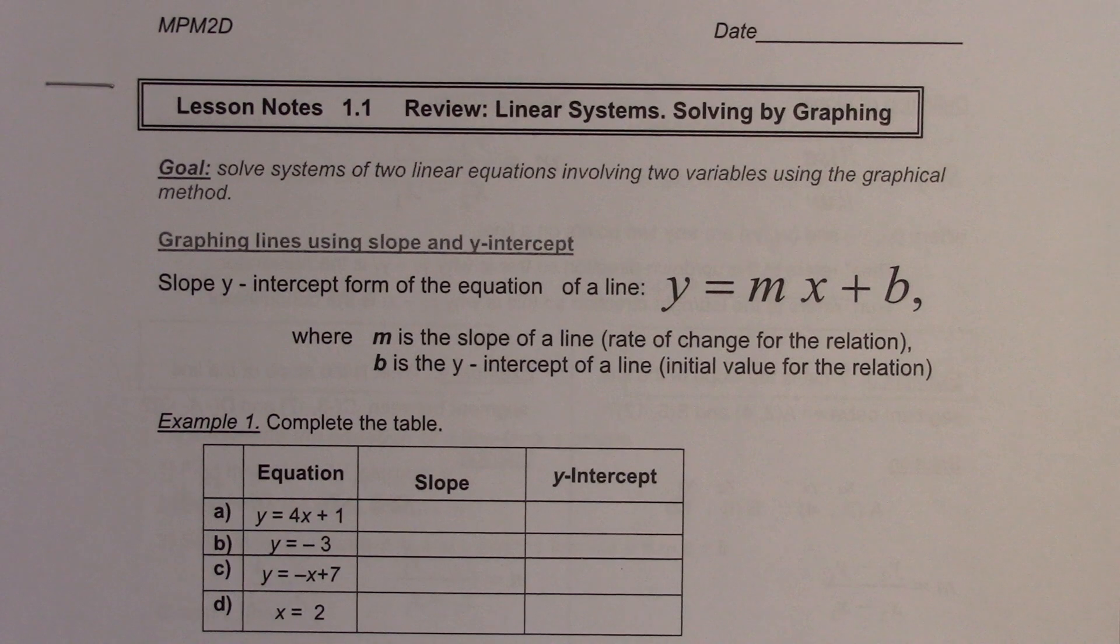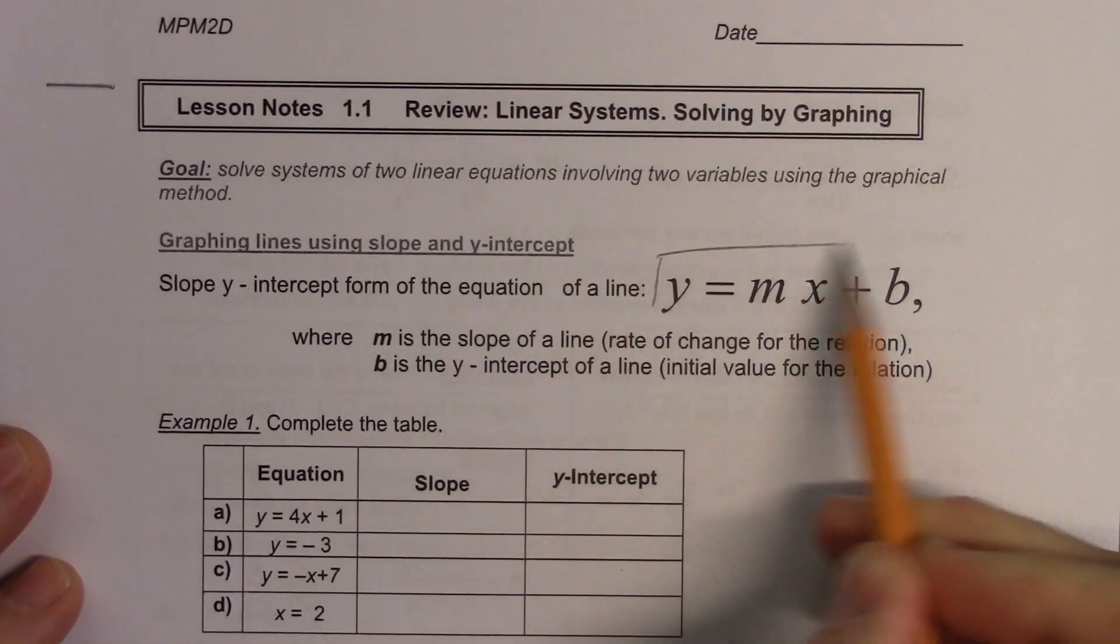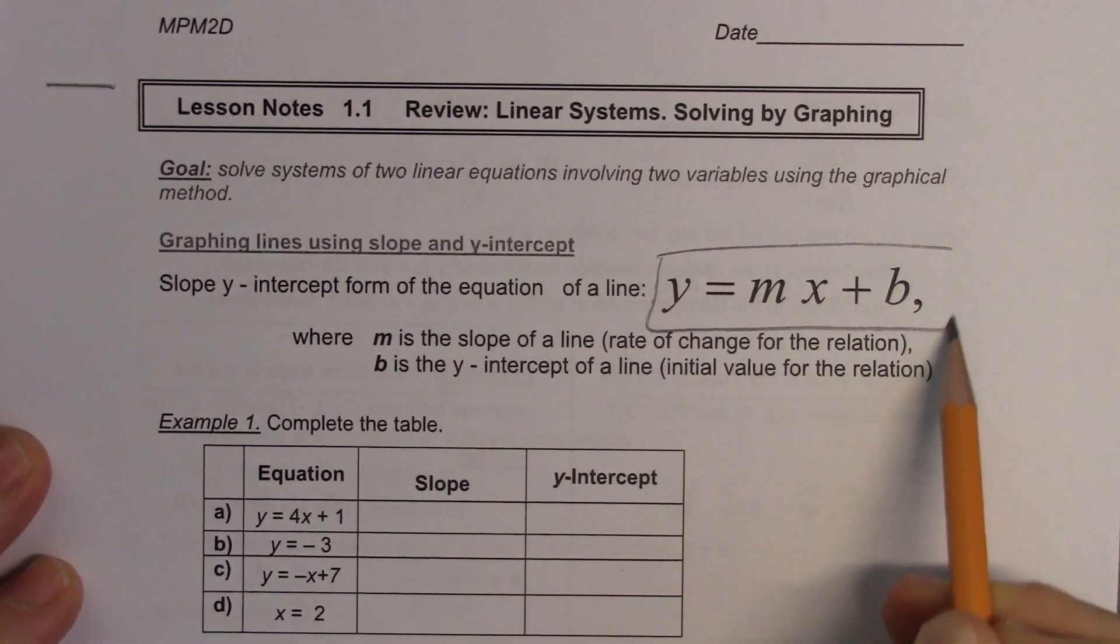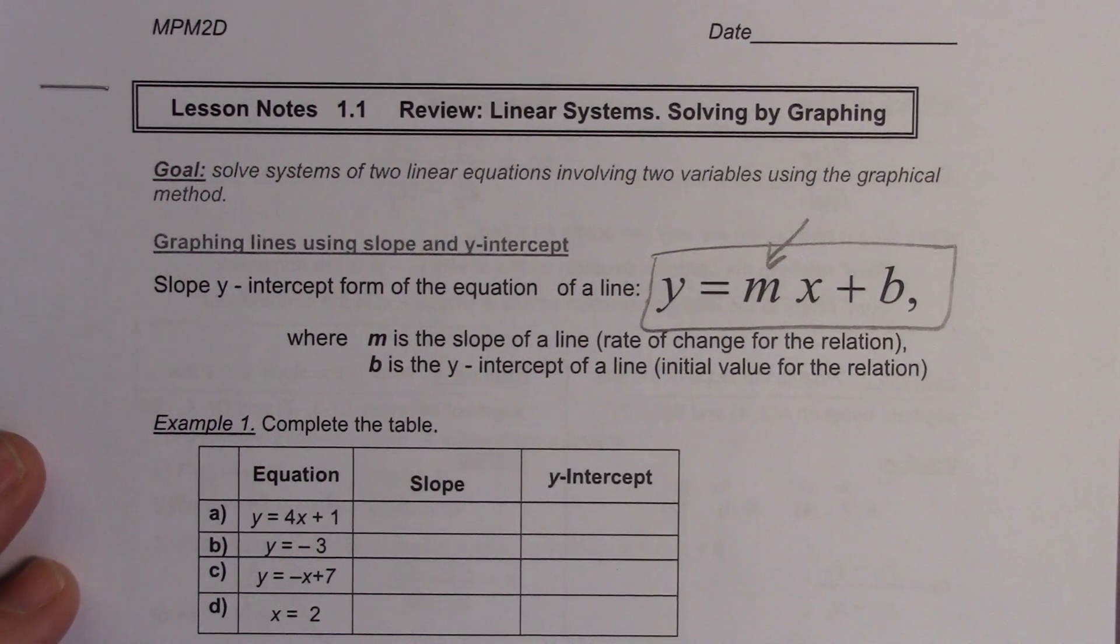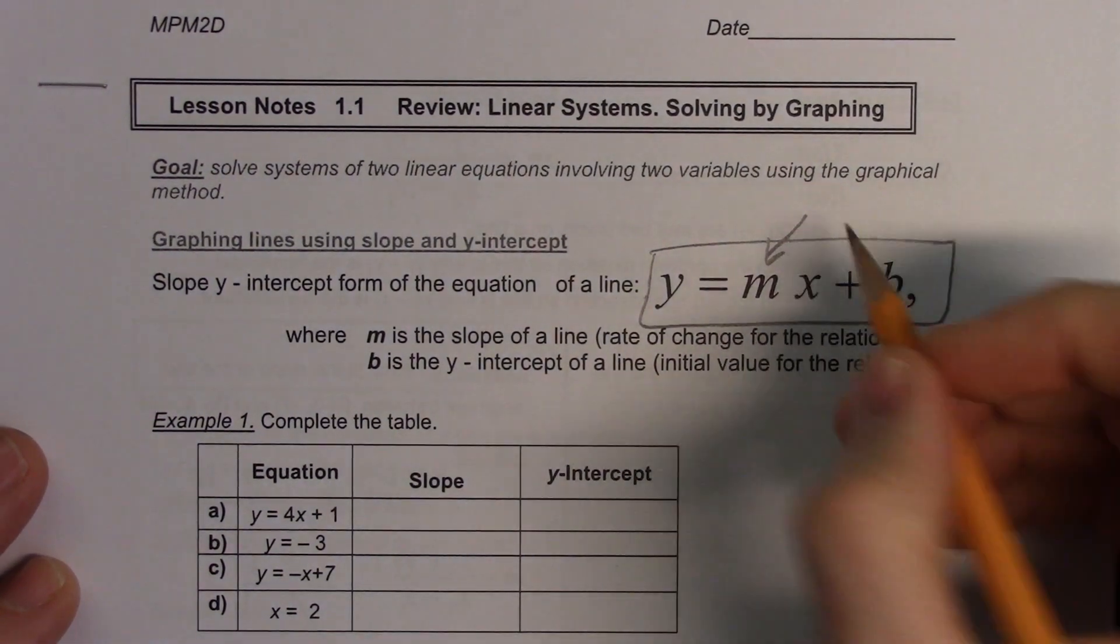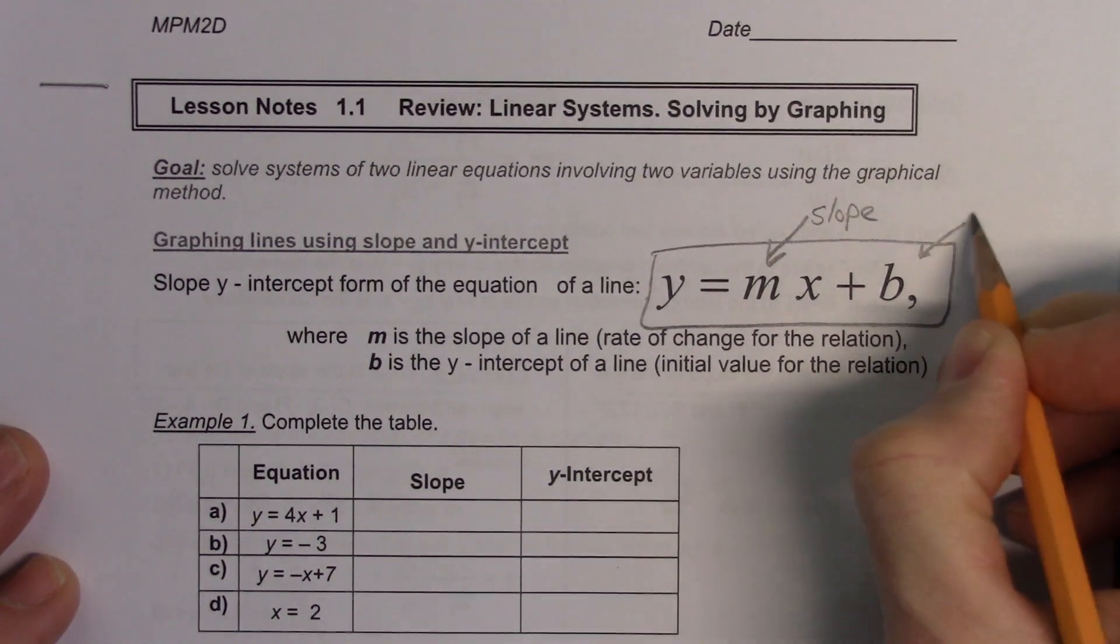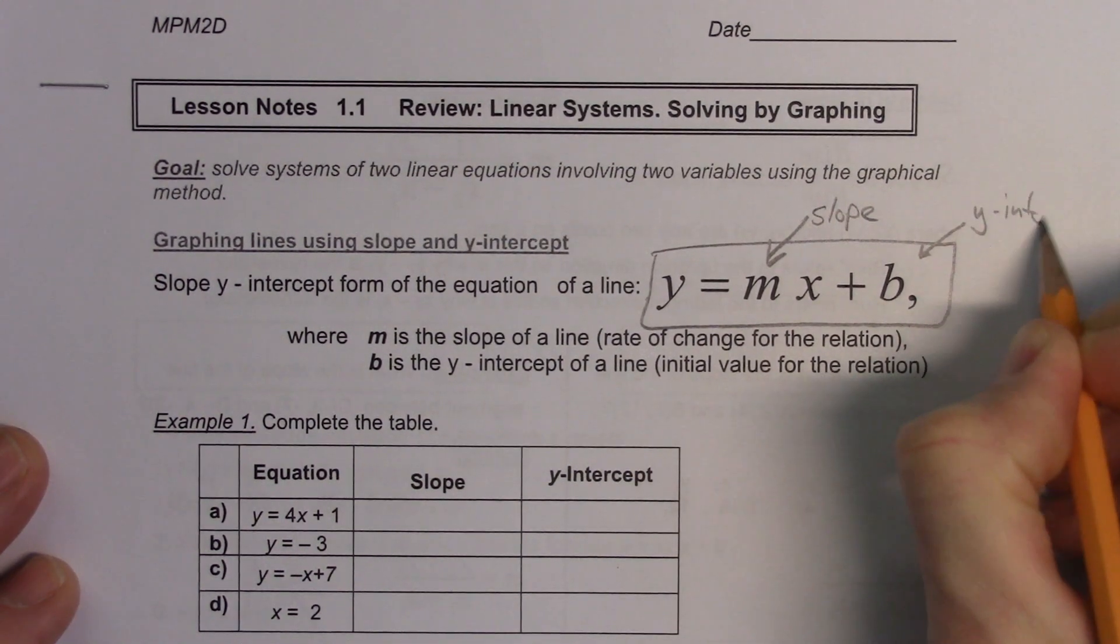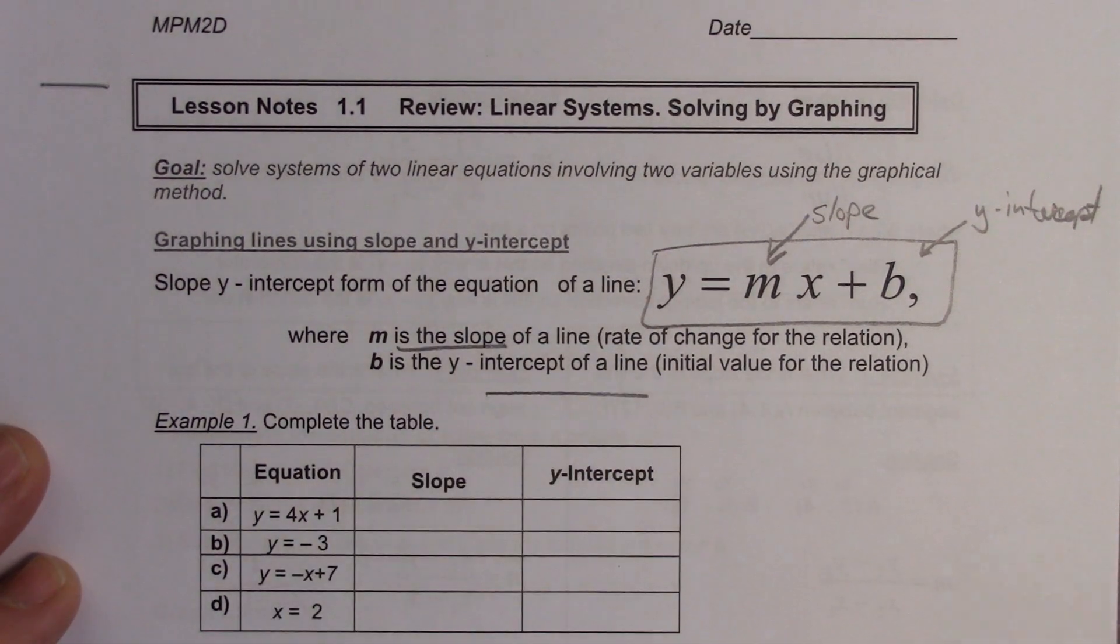Okay, we're graphing lines using slope and y-intercept. So here is our very famous equation of a line, y equals mx plus b. Who can tell me what m is? Slope, great. That is the slope. Who can tell me what b is? Y-intercept. Perfect. Okay, and they're right here. Slope and y-intercept.